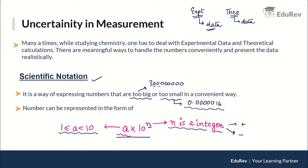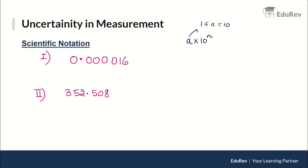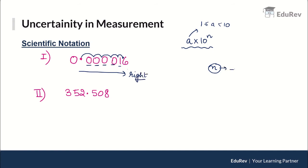Let us understand how to represent a number in scientific notation. Take the example 0.000016. We need to represent it as a × 10ⁿ. We shift the decimal point: 1, 2, 3, 4, 5 shifts to the right, so the scientific notation is 1.6 × 10⁻⁵. The power is negative because we shifted the decimal to the right.